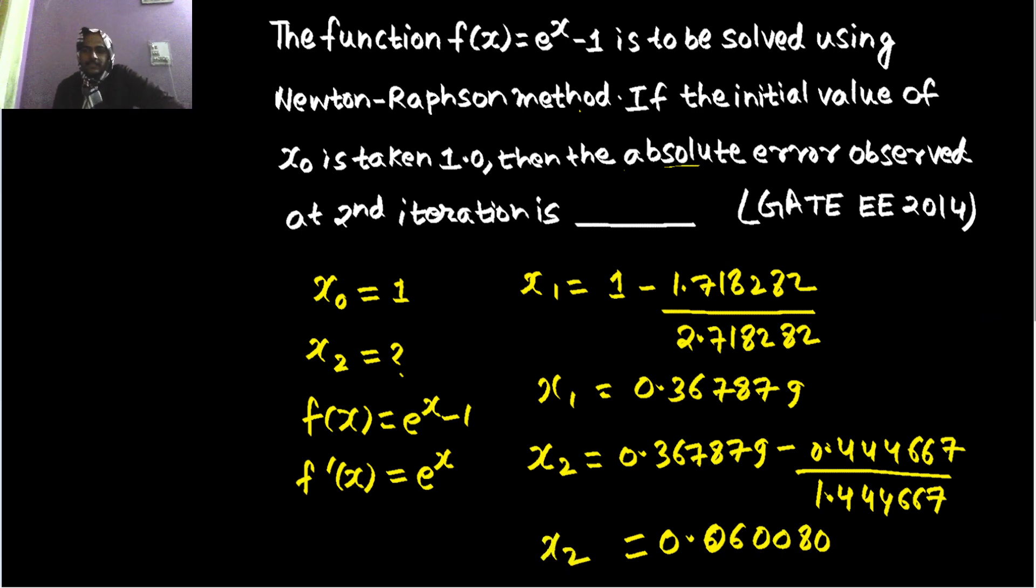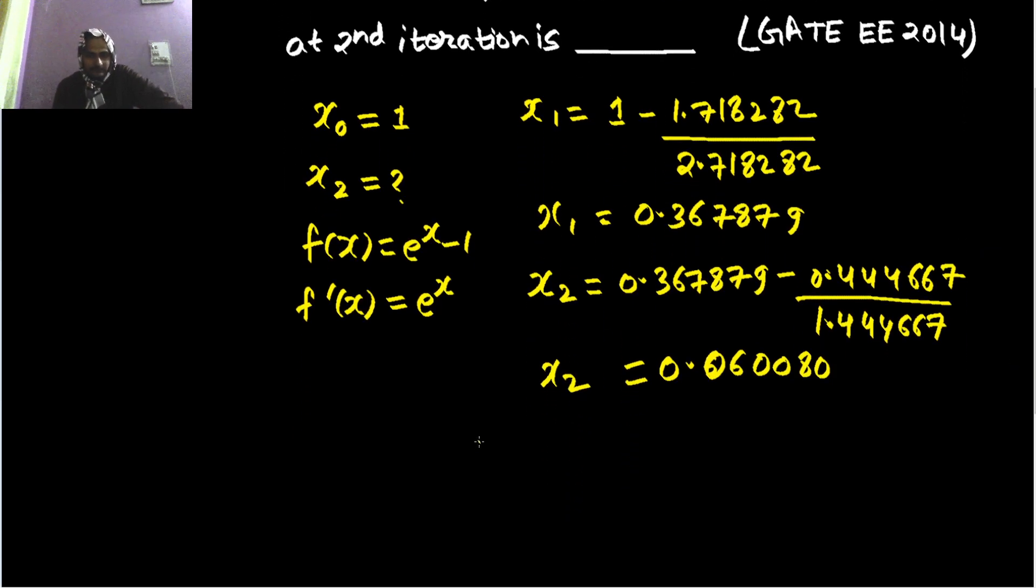Now if I were to find the absolute error, that will be nothing but the absolute error, which will be the mod of... this will be 0.060080 minus 0.